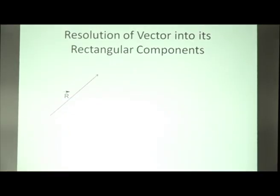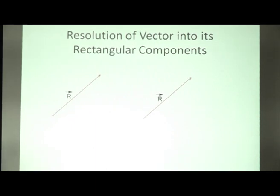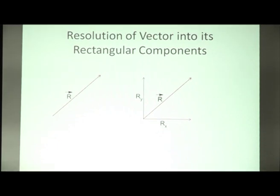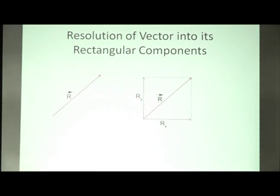Now let's look at the rectangular components of a vector in the diagram. This is vector r. Now let's resolve it into two perpendicular components. This is the component along the x-axis, rx, and this is the component along the vertical direction, ry, along the y-axis. As you can see here, these two components form a rectangle. And here the angle theta is the angle between the given vector and the x-axis taken in the positive direction.